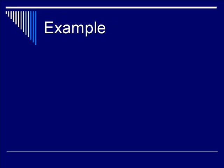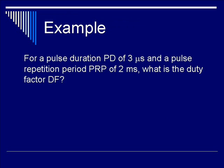Let's do an example. For a pulse duration PD of 3 microseconds and a pulse repetition period PRP of 2 milliseconds, calculate the duty factor DF. Recall the equation shown earlier. Utilize PD of 3 microseconds, which can be rewritten as 0.003 milliseconds.